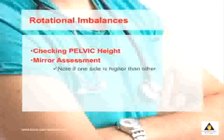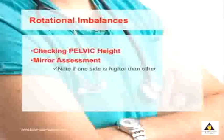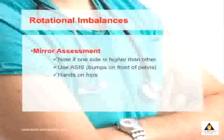The first test is very simple — all you're doing is looking at your pelvic height. Look in a mirror and note if one side of your pelvis is higher than the other. There are two landmarks you can use: the first is what's called the ASIS, which are the bumps on the front of your pelvis, or alternately you can just place your hands on top of your hips. One side of your pelvis being higher than the other creates what's called a rotational imbalance.